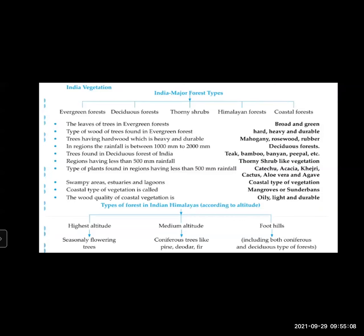In the Indian Himalayas, forests are classified by altitude. At the highest altitude, seasonally flowering trees are found. At medium altitude, coniferous trees like pine, deodar, and fir are found. Near the foothills, both coniferous and deciduous types of forest are found.